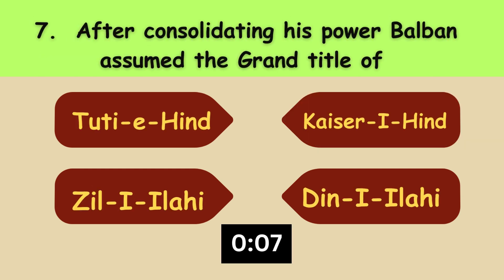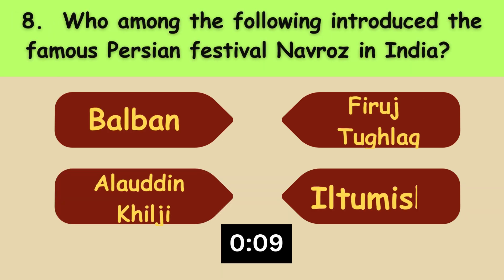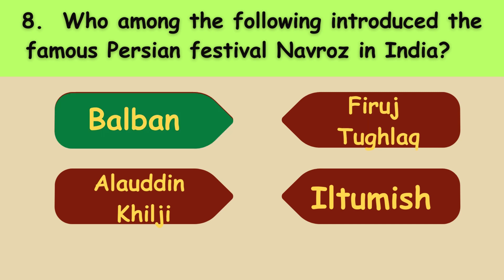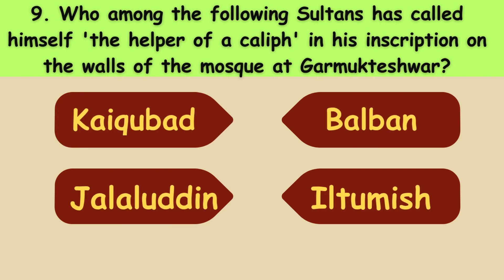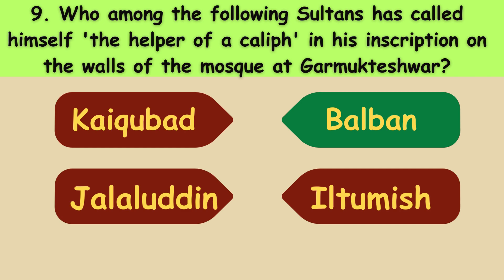After consolidating his power, Balban assumed the grand title of Zililahi. Who among the following introduced the famous Persian festival Navroz in India? The answer is Balban. Which sultan called himself the helper of a caliph in his inscription on the walls of the mosque at Gar Mukteswar? The answer is Balban.